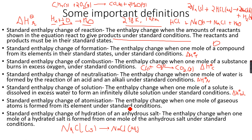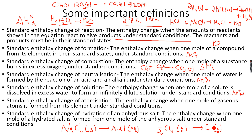The standard enthalpy change of atomization is the enthalpy change when one mole of gaseous atoms is formed from its element under standard conditions. For example, when forming Cl atoms from Cl₂, this equation represents the standard enthalpy change of atomization of Cl₂ — one mole of gaseous Cl atoms is formed. Similarly for sodium: Na solid gives Na gas. This is denoted by ΔH°atm.